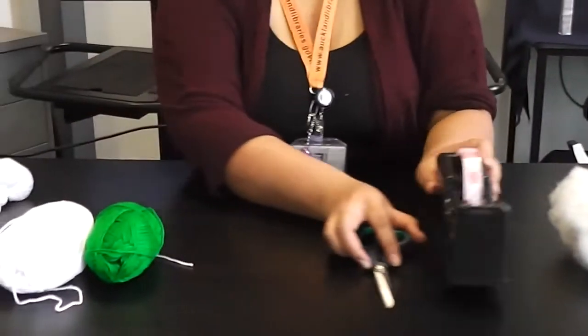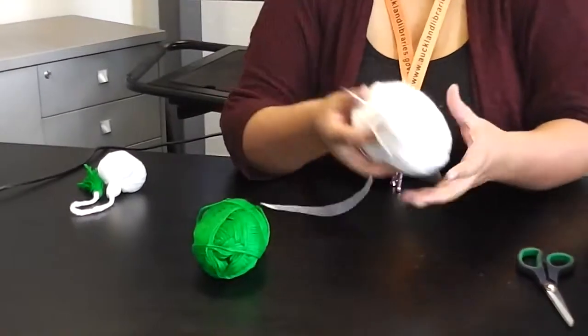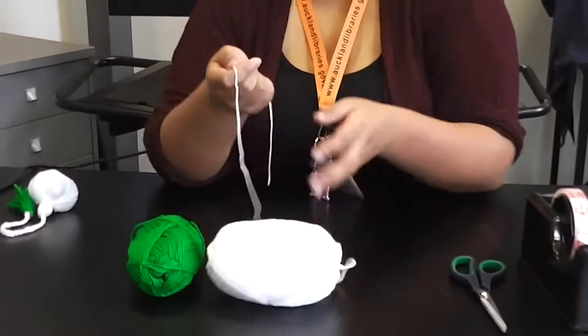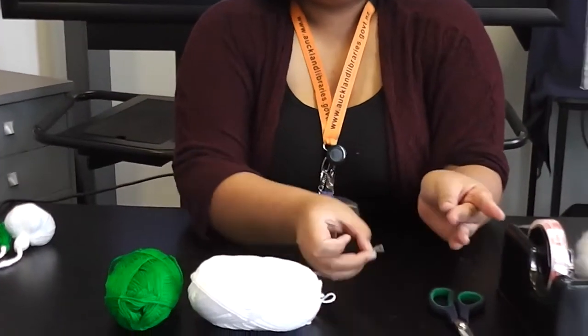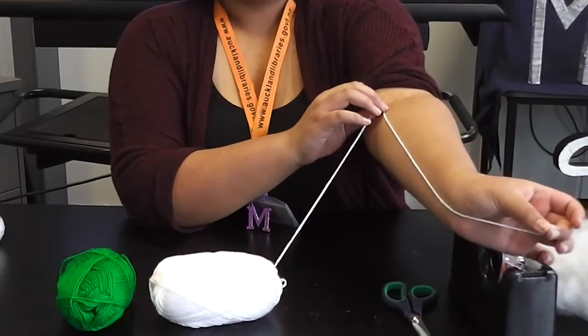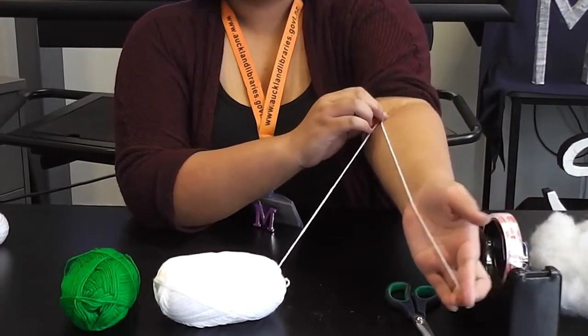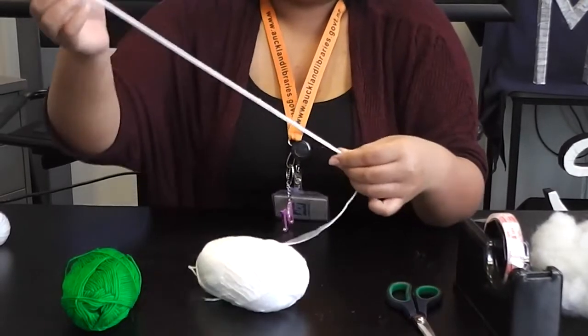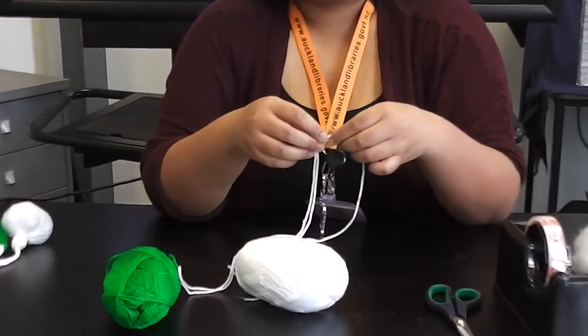So first we'll be measuring how long your wool needs to be. So you'd go from the tip of the middle of your finger all the way to your elbow. Now this is just so that it would be the right length for you. If you wanted to do it with your friends ones that's fine.